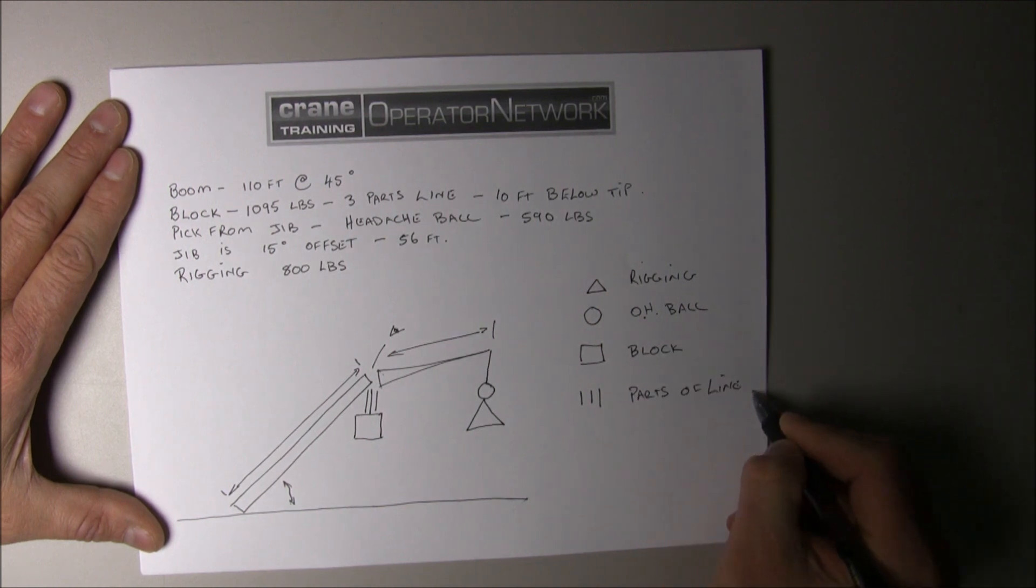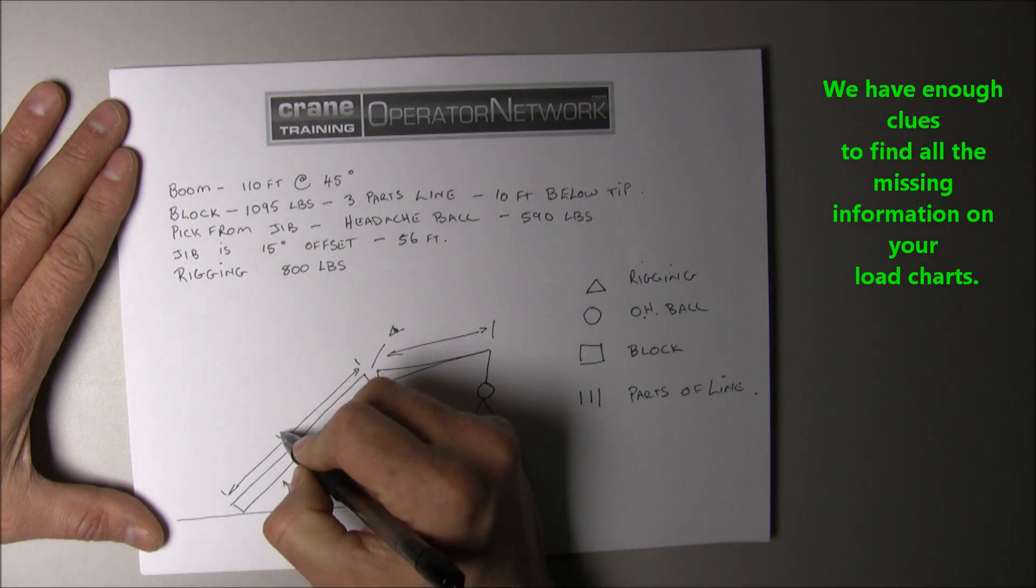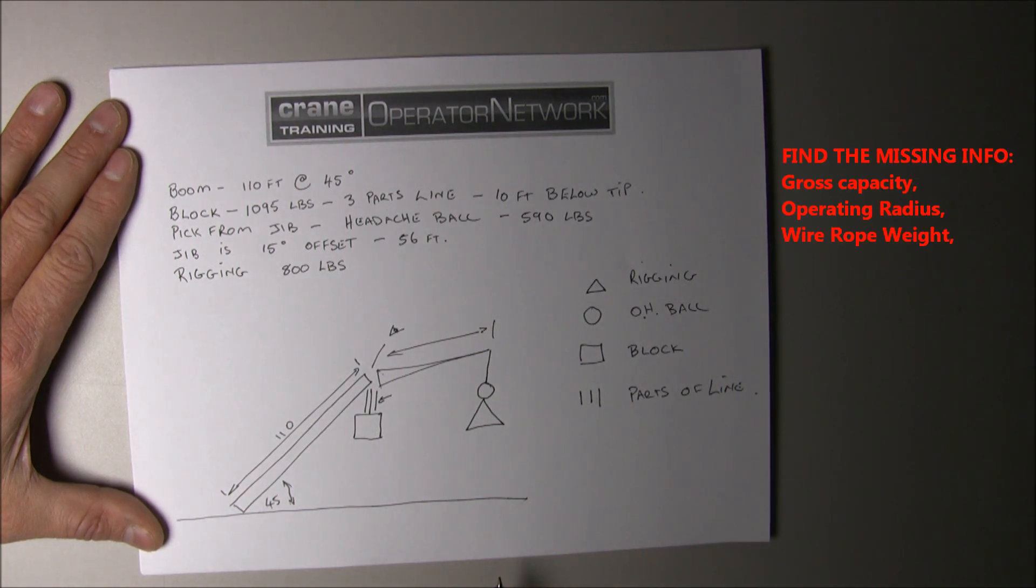We have enough clues to find the missing information on your load charts. Take a moment and identify all the missing information, such as the gross capacity, the operating radius, the wire rope weight, etc.